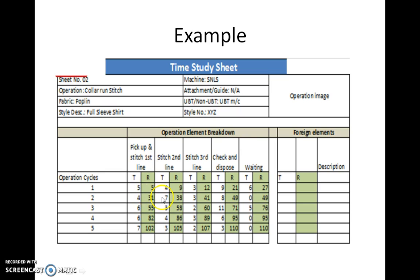Since this involves a very short duration of time, we cannot start and stop the stopwatch for every element. So the stopwatch is continued and recorded for each element, continuing till the end of the 5th cycle. Later, the individual element time is obtained by simply subtracting from the previous times.